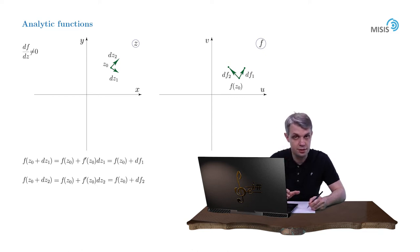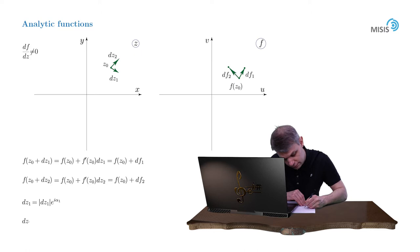And now let us study the relative positions of the initial vectors and the images of these vectors. To this end we introduce their moduli and arguments and also let us express the derivative of the function at point z node via its modulus and argument.